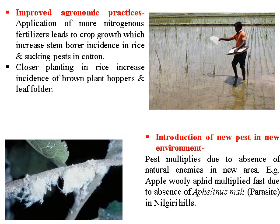Improved agronomic practices like the application of more nitrogen fertilizer such as urea in rice leads to increased stem borer attack in rice and sucking pests in cotton. Farmers should avoid this to minimize pest attack. Closer planting of rice increases the incidence of brown plant hopper and leaf folder. Introduction of new pests in a new environment: pests multiply due to the absence of natural inhibitors in the new area. For example, apple aphid multiplied fast due to the absence of its parasite found in the Nilgiri hills.